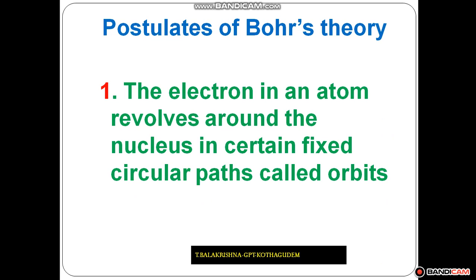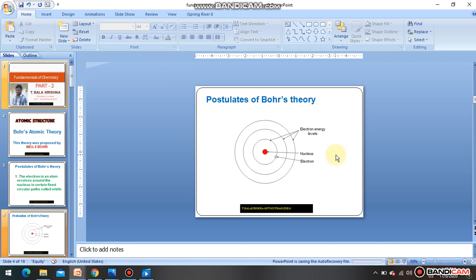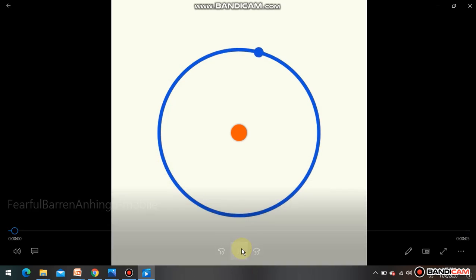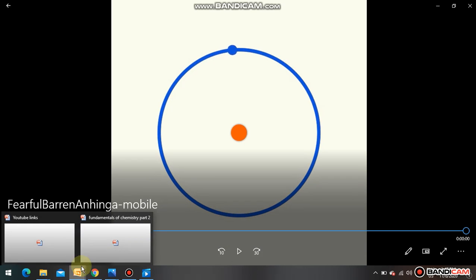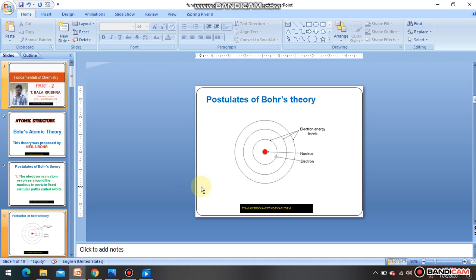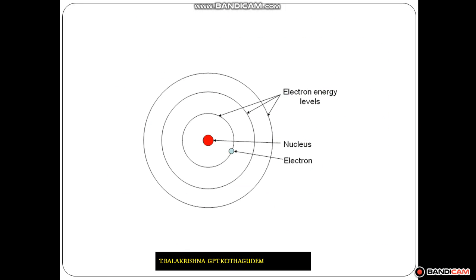Every atom has electrons, protons, and neutrons. Protons and neutrons are present in the center of the atom, which is called the nucleus. Electrons are revolving around the nucleus in a fixed circular path. In the diagram, the red color represents the nucleus, which contains protons and neutrons, and the blue color represents the electrons revolving around the nucleus.